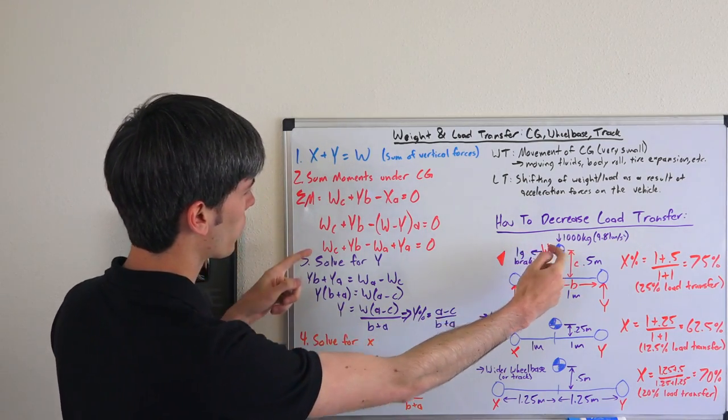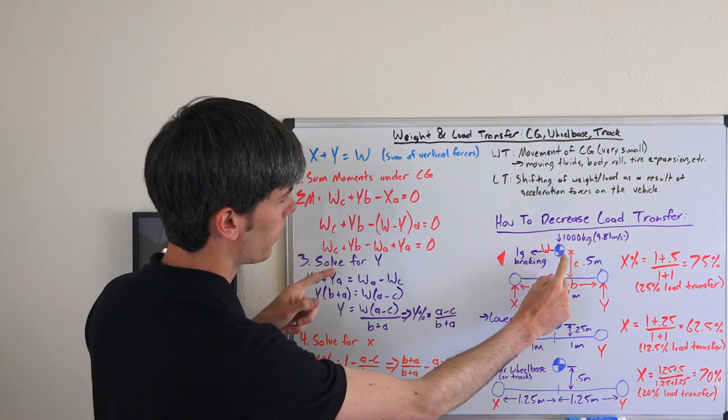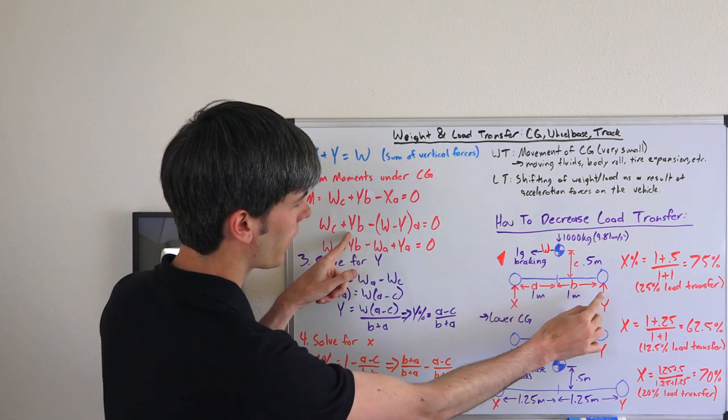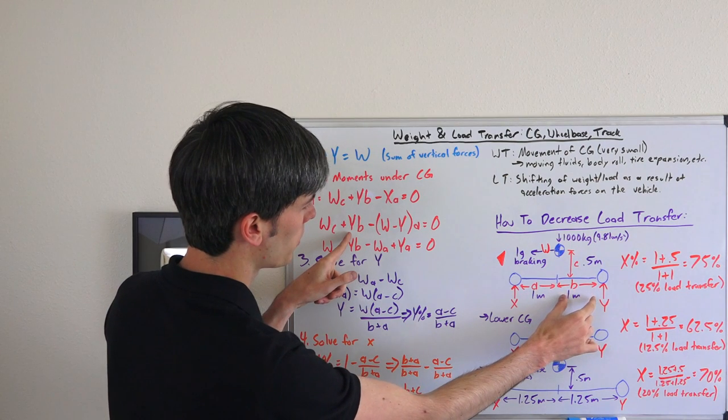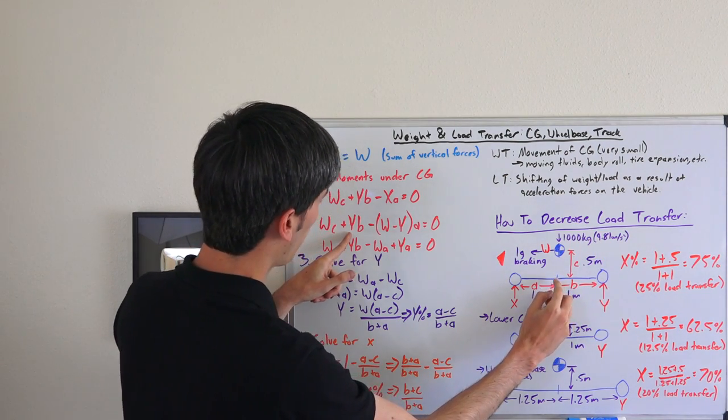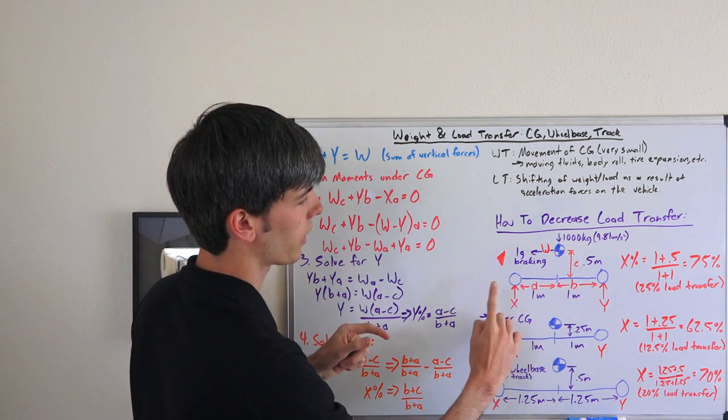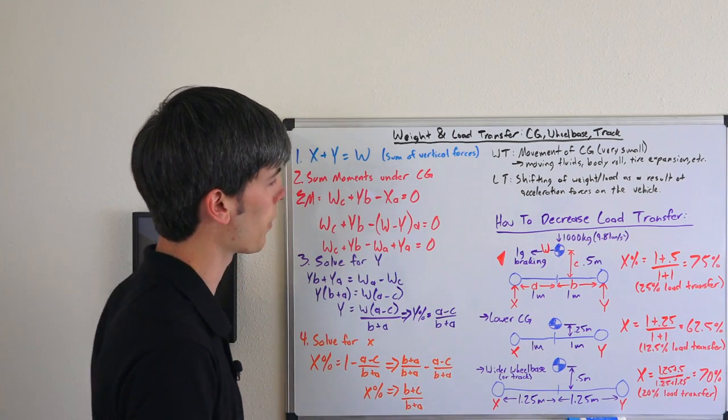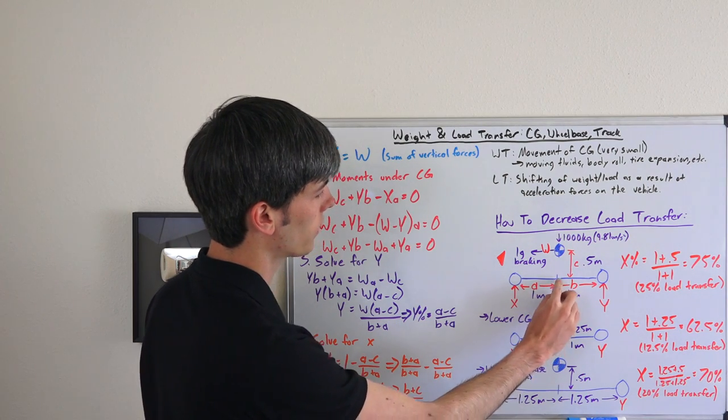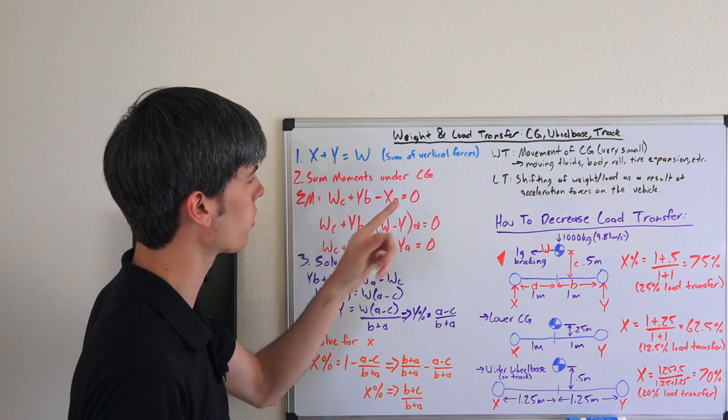So you're going to have that force, the weight of the vehicle times the distance from the center of gravity to that point which we're summing the moments. We're going to add to that the force Y which is going to be multiplied by b, that's the length of its arm acting about this, and then we're going to subtract from that X times a, and we're subtracting because X is operating in the opposite direction here. So the force pointing up and then acting along this distance a. So wc plus yb minus xa equals 0.